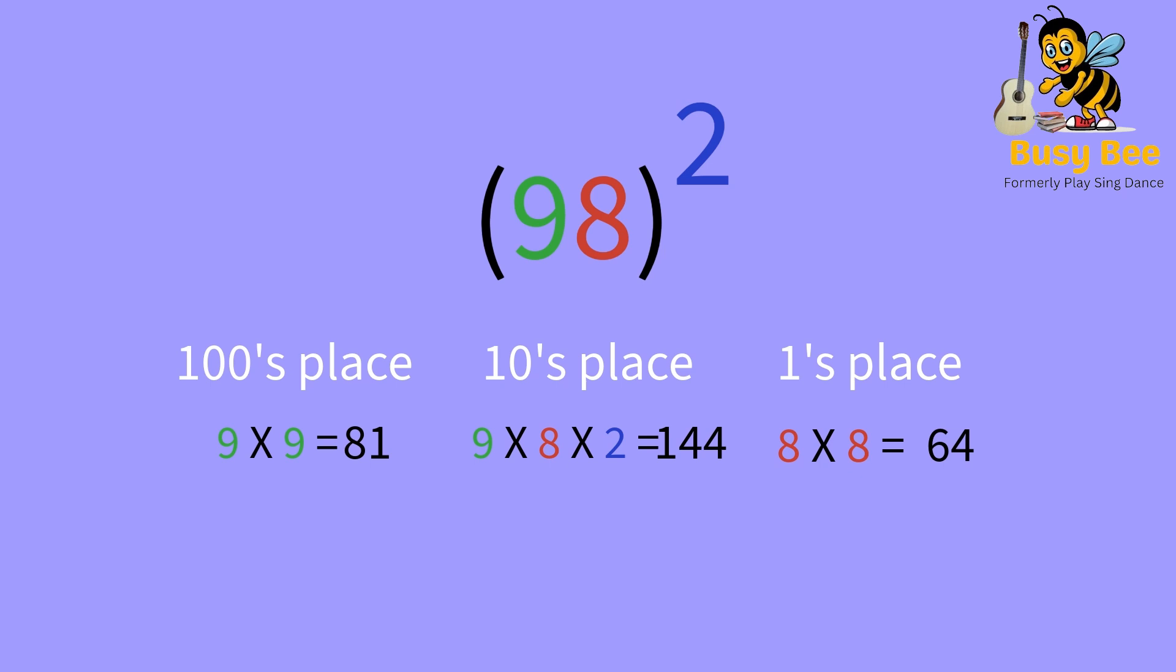For the first step, we multiply 8 times 8, which is 64. For the second step, we multiply 9 times 8 times 2, which is 144. For the last step, we multiply 9 times 9, which is 81.